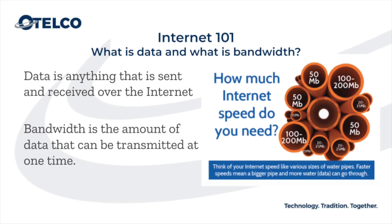What's the difference between bandwidth and data? Data is anything you send or receive over the internet, and bandwidth is the size of the pipe that the data travels through. Think of a water pipe — the bigger the pipe's diameter, the more water that can pass through. The capacity of a water pipe is measured in gallons per minute, while the capacity of an internet connection is measured in amounts of data per second.